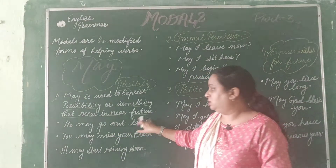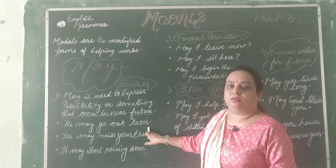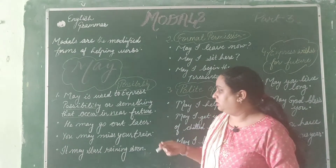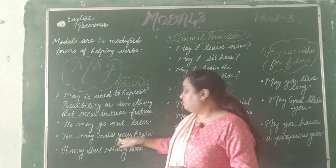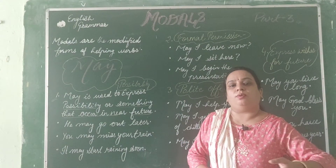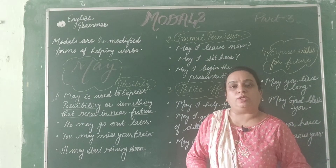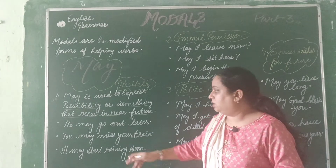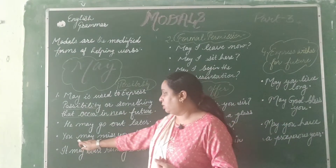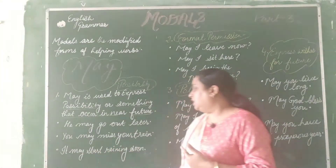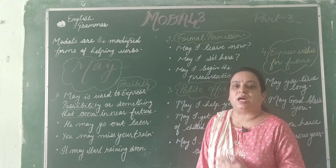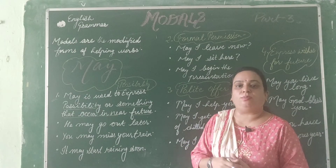Let us understand with examples. 'He may go out later' — this is one of the possibilities. 'You may miss your train' — because someone is going to catch the train very soon, so there is a possibility he may miss his train. 'It may start raining soon' — this is also a possibility. When there are more chances, it is a strong possibility.